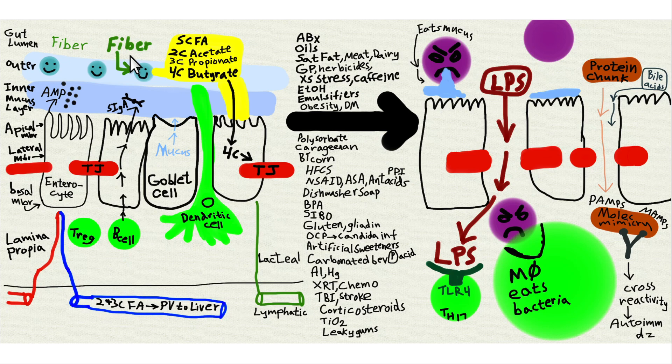Dennis Burkitt believed we should be eating more than 100 grams of fiber a day. The average American is only eating around 10 grams of fiber per day. Dr. McDougall feels people should try to get at least about 50 grams. If you eat a plant-based diet — I'm 100% vegan — you'll get plenty of fiber. It's really a non-issue. Eating whole foods, you'll get lots of fiber.